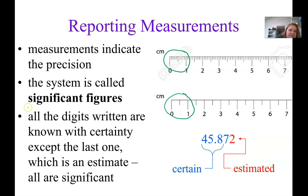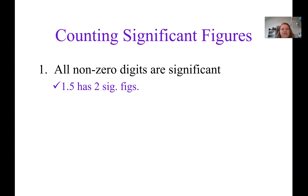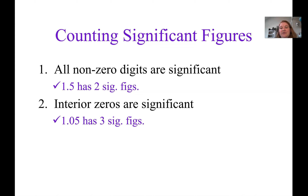The term on this slide is significant figures. When we do a measurement, all of the digits — including that estimated digit — are significant figures. There's a set of rules to determine how many significant figures a number has. The tricky part is the zeros. Rule one: all non-zero digits 1 through 9 are significant figures. So really, the rest of the rules deal with zeros.